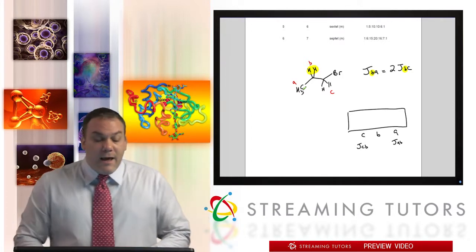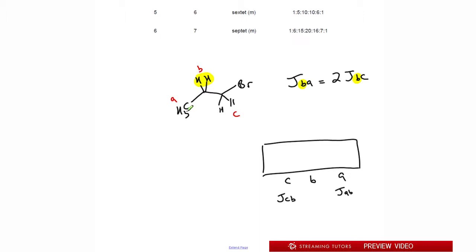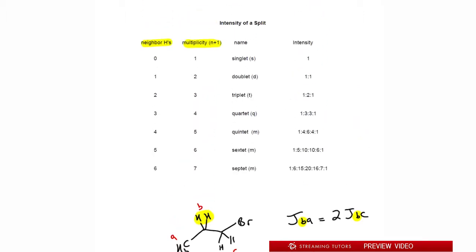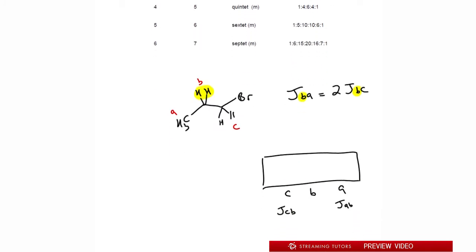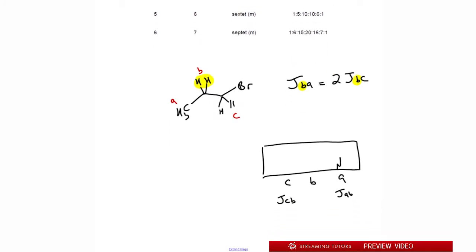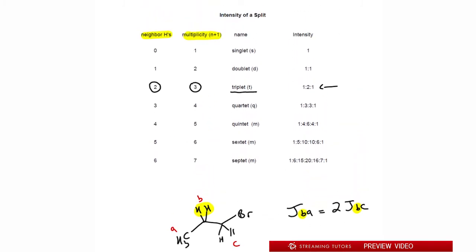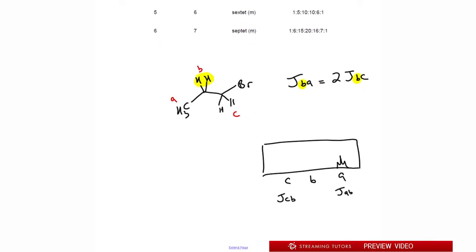Let's knock out A first. A's neighbors are B, which has two H's, so n+1 = 3 — that's a triplet with a 1:2:1 intensity ratio. For C, it's also split only by B's two H's, so it's also a triplet with a 1:2:1 ratio. The height of the middle peak should be two times bigger than both ends.